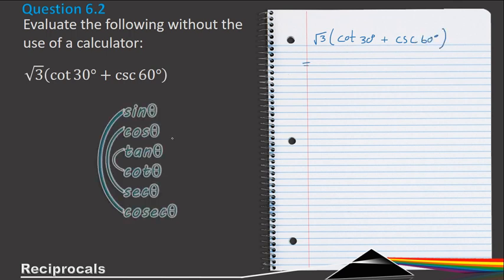Now, if I look at these reciprocals, cot and tan goes together, so this one is then 1 over tan 30°, plus, and cosec and sine goes together, so this is 1 over sin 60°.